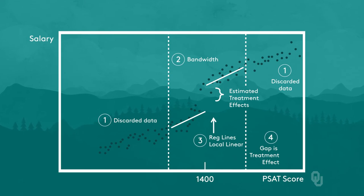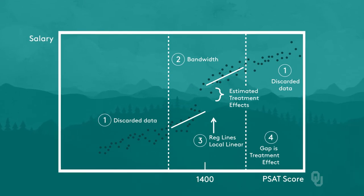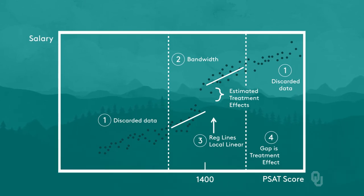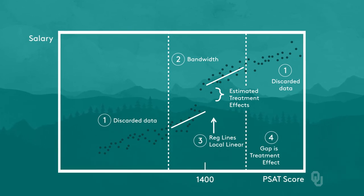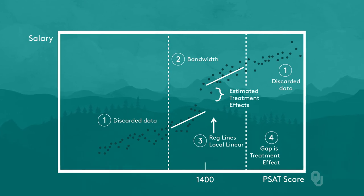Because we are actually getting local randomization of treatment, most RD papers do not add other covariates to the estimated models. The regressions are just the outcome regressed on a polynomial of the variable-determining treatment plus a dummy for the possible shift at the cutoff on all the data, or the outcome variable linearly regressed on the treatment-determining variable along with a cutoff dummy on a subset of the data near the cutoff.